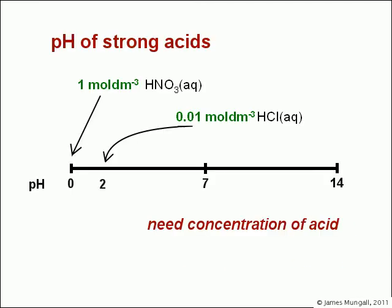So if we're looking on our pH scale, if we've got a one mole per decimeter cubed solution of a strong acid, its pH will be zero. If we have a 0.01 mole per decimeter cubed solution of a strong acid, its pH won't be quite so low, because it's not so concentrated. So we need the concentration of the acid to work out the pH, but then all you do is do minus log of it, and that will give you your pH.